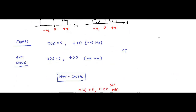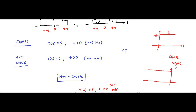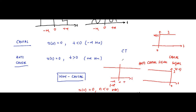Looking at another important example — the unit step signal u(t), which has a value of 1, is a causal signal. And if we take the time-reversed signal u(-t), then this will be an anti-causal signal. And if we add them together — u(t) plus u(-t) — it will become a non-causal signal, because it will exist on both the negative and positive time sides.